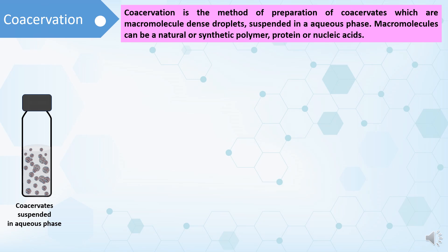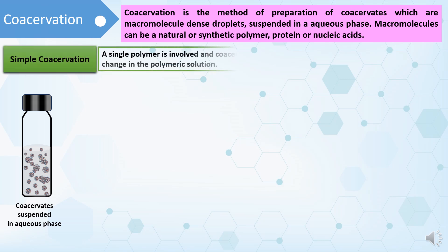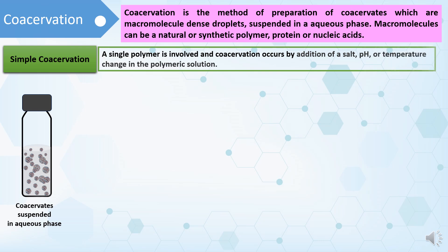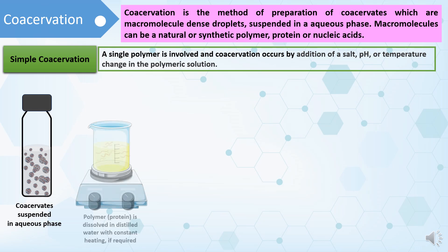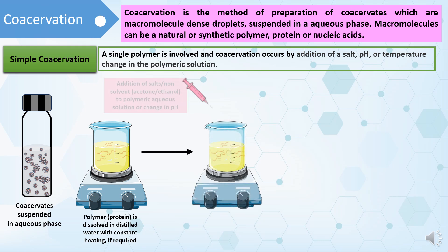The first type of coacervation is simple coacervation, where a single polymer is involved and coacervation occurs by addition of a salt, pH, or temperature change in the polymeric solution. A polymer or protein is dissolved in distilled water with constant heating if required. Then either salts or non-solvents, for example acetone or ethanol, are added to the polymeric aqueous solution, or the pH of the polymeric solution can be changed to get simple coacervates.